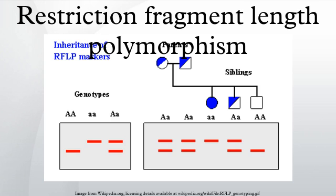In molecular biology, restriction fragment-length polymorphism, or RFLP, is a technique that exploits variations in homologous DNA sequences. It refers to a difference between samples of homologous DNA molecules that come from differing locations of restriction enzyme sites, and to a related laboratory technique by which these segments can be illustrated. Although now largely obsolete due to the rise of inexpensive DNA sequencing technologies, RFLP analysis was the first DNA profiling technique inexpensive enough to see widespread application.